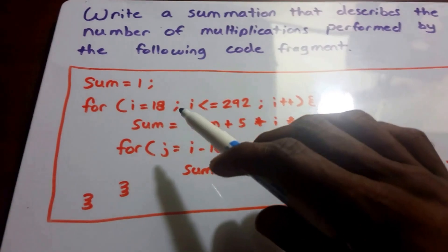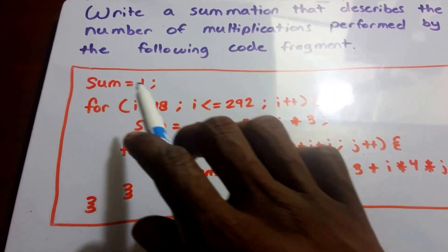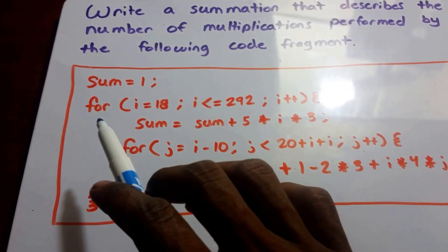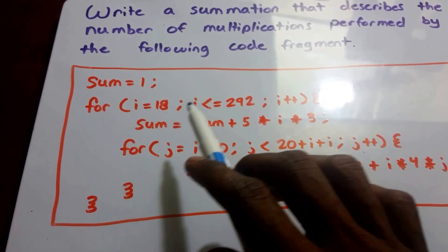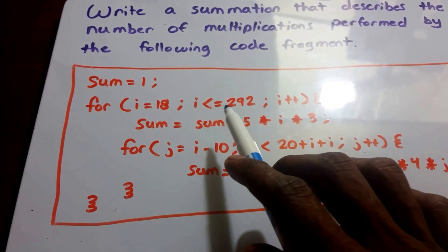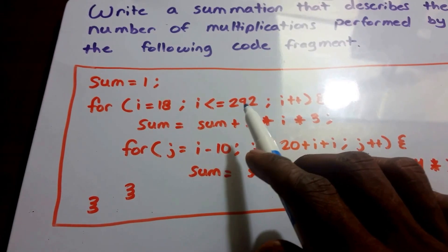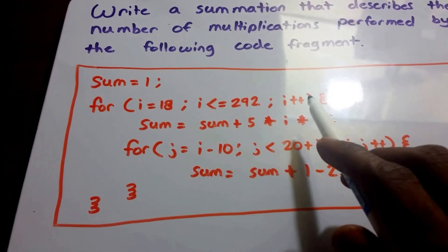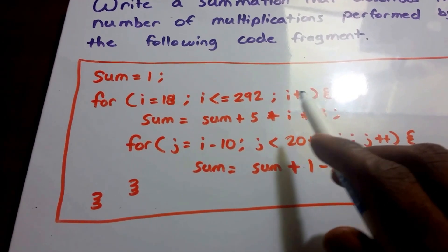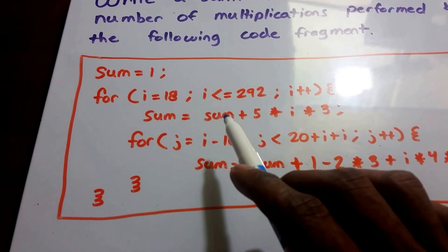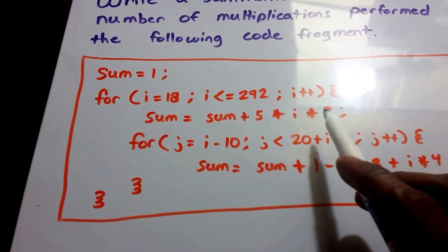Alright, so let's go ahead and read this code fragment. First it says sum equals 1, and then we have our for loop that runs from i equals 18 all the way up to i is less than or equal to 292, and then i is going to increment by 1 each time. And then our sum is going to equal sum plus 5 times i times 3.